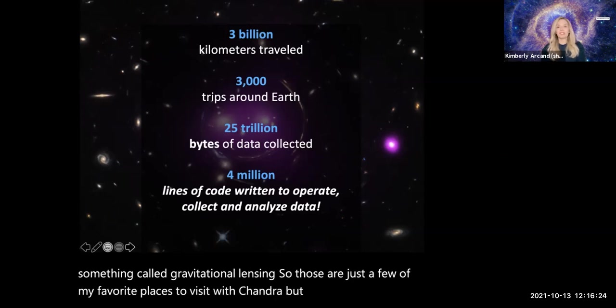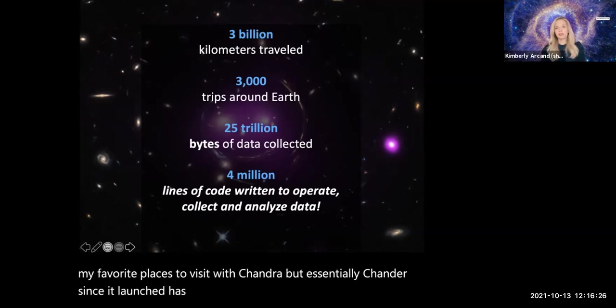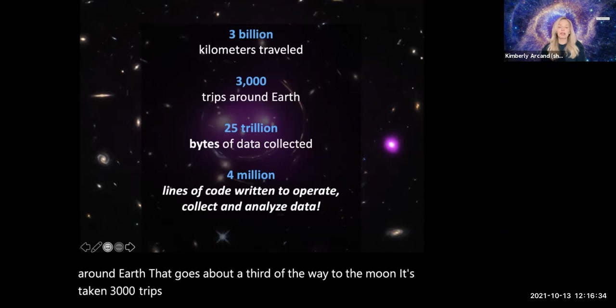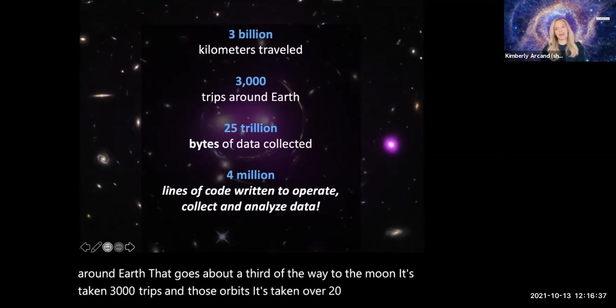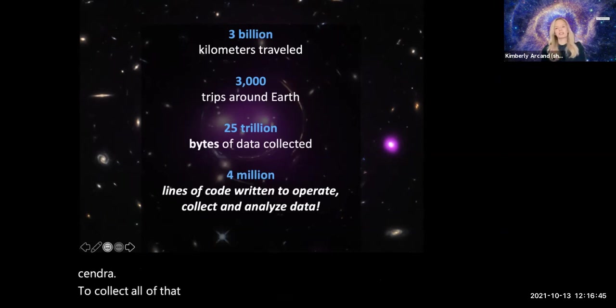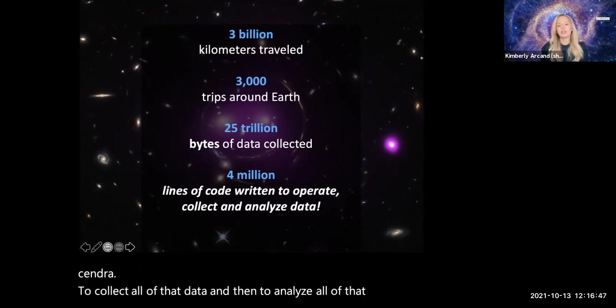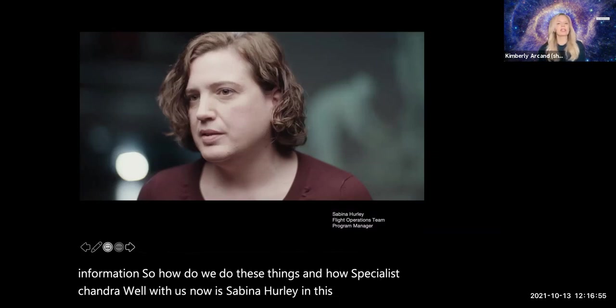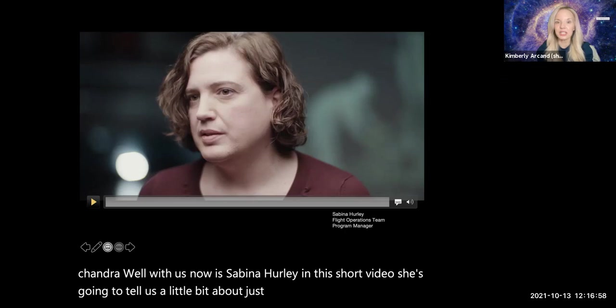Chandra, since it launched, has traveled billions of kilometers in its orbit around Earth. It goes about a third of the way to the moon. It's taken 3,000 trips in those orbits. It's taken over 25 trillion bytes of data. And it's taken more than 4 million lines of code to operate Chandra, to collect all of that data, and then to analyze all of that information. With us now is Sabina Hurley in this short video. She's going to tell us a little bit about just how difficult and interesting it was to be able to build Chandra in the first place.